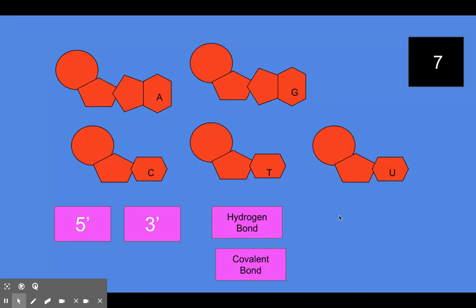The components of DNA and RNA are seen here. Sketch a short piece of DNA and a short piece of RNA using these symbols. Label the five prime and three prime ends of both DNA and RNA. Identify hydrogen bonds and covalent bonds. Explain what it means to say DNA is anti-parallel.